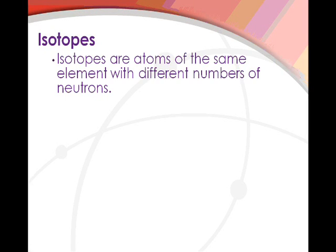Today's video is about isotopes. Isotopes are atoms of the same element with different numbers of neutrons. That's the definition you need to be familiar with — know the definition of isotope.